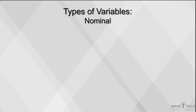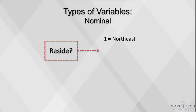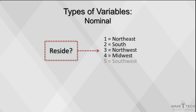For nominal categorical variables, the order makes no difference. Here's an example for the variable 'reside': 1 equals Northeast, 2 equals South, 3 equals Northwest, 4 equals Midwest, and 5 equals Southwest. It doesn't matter what order we use for these categories — Midwest can be coded as 4, 2, or 5, because there's not an ordered value associated with each response.